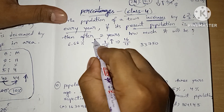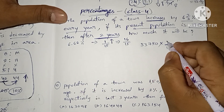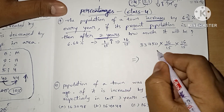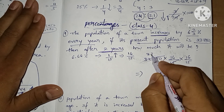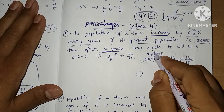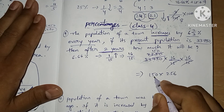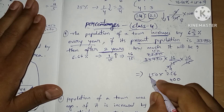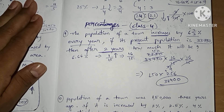The present population is 33,750 and we need to find the population after two years. For two years, first it will be 15 then increased to 16, and in the second year also 15 increased to 16. Working through the multiplication: 150 × 16 × 16 gives us 38,400. So 38,400 is our answer for this question.